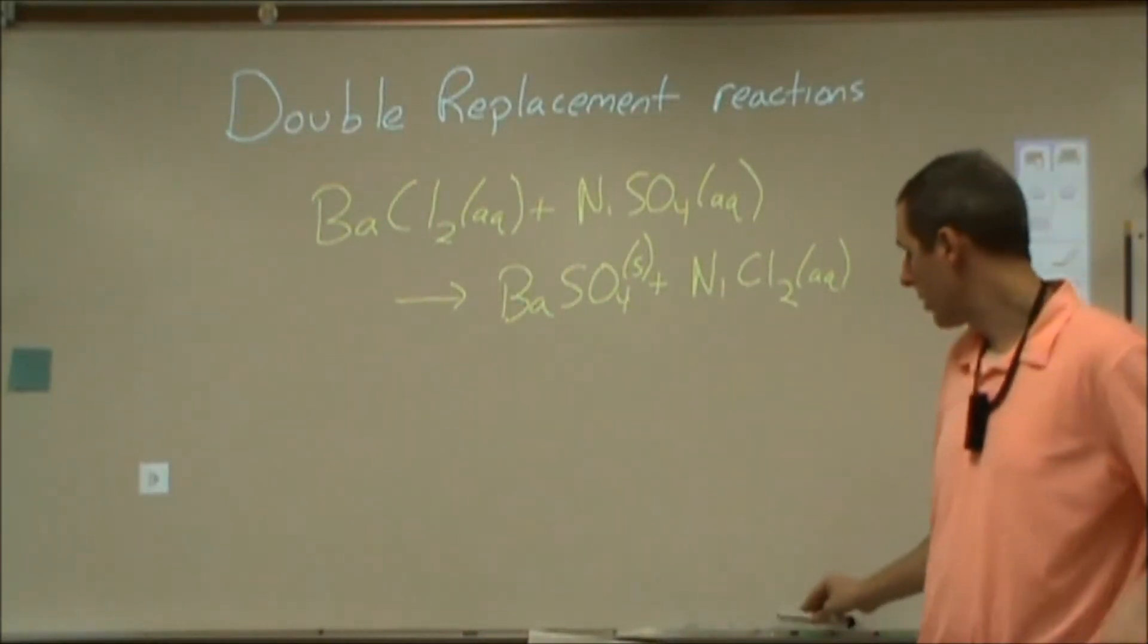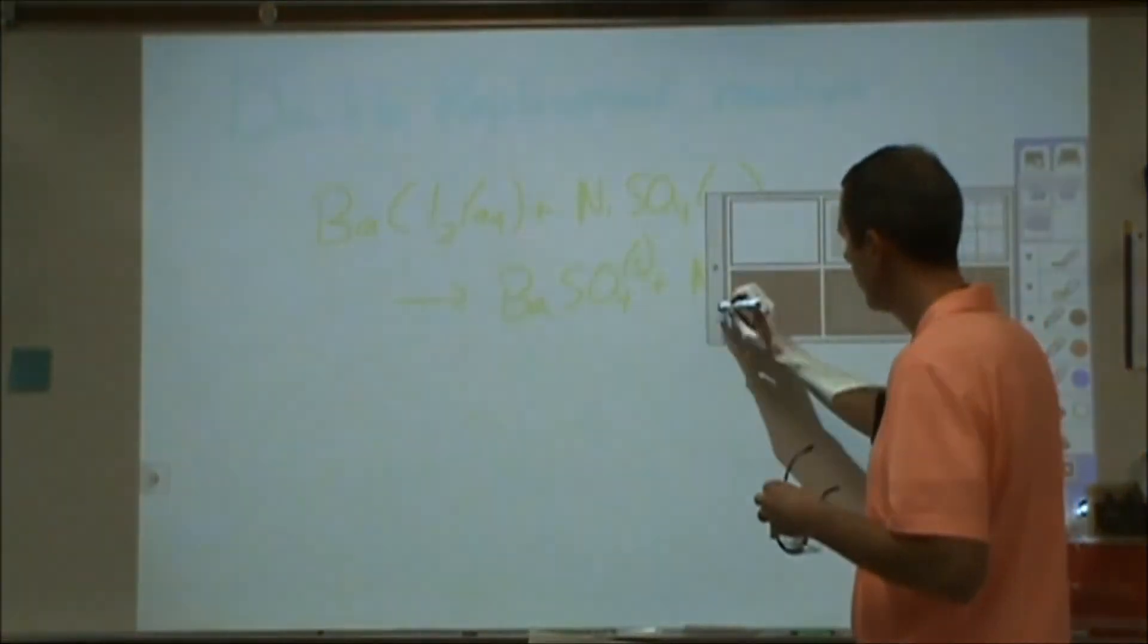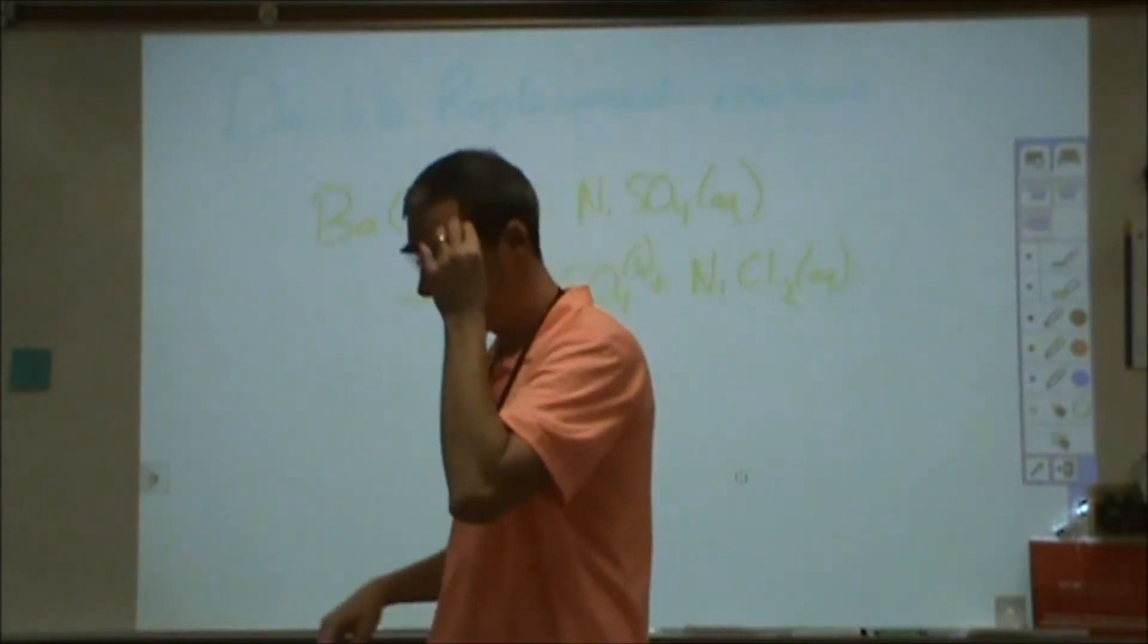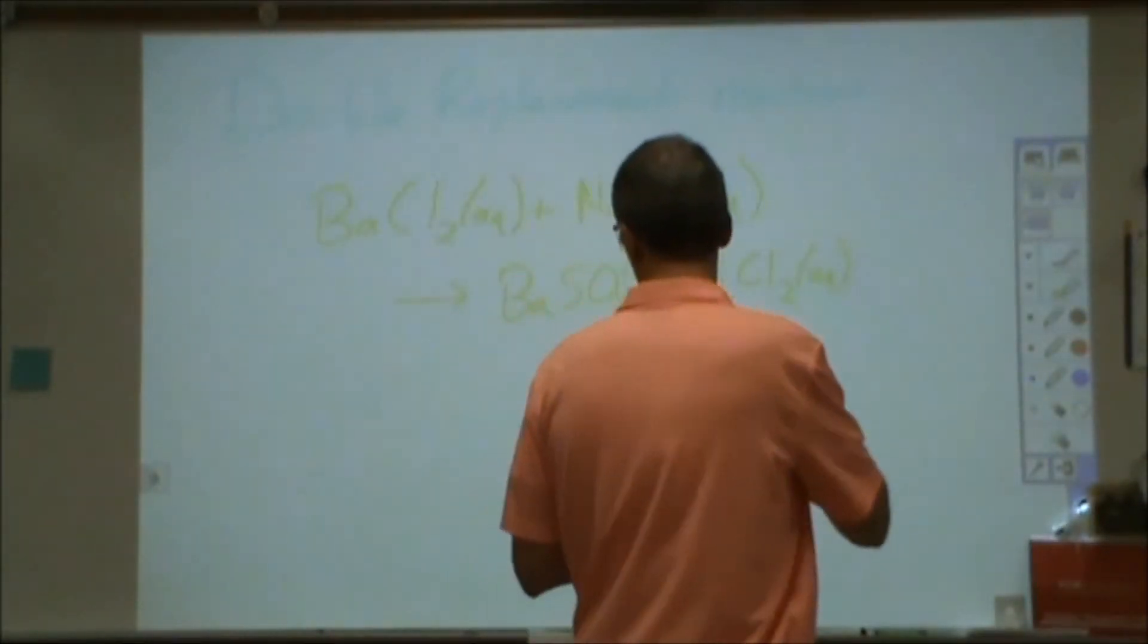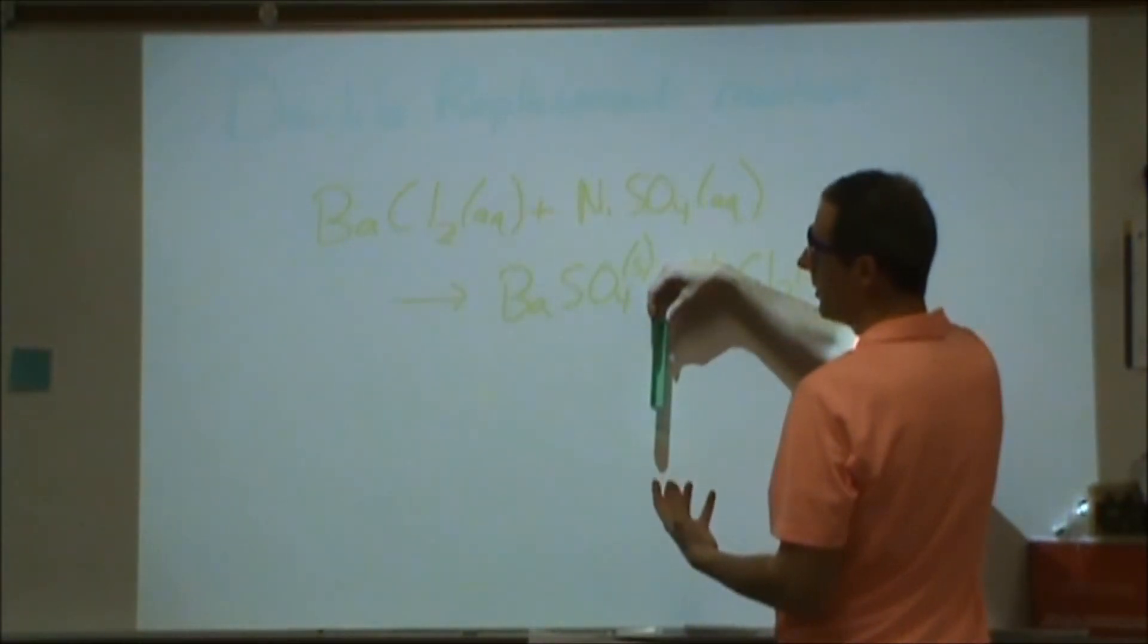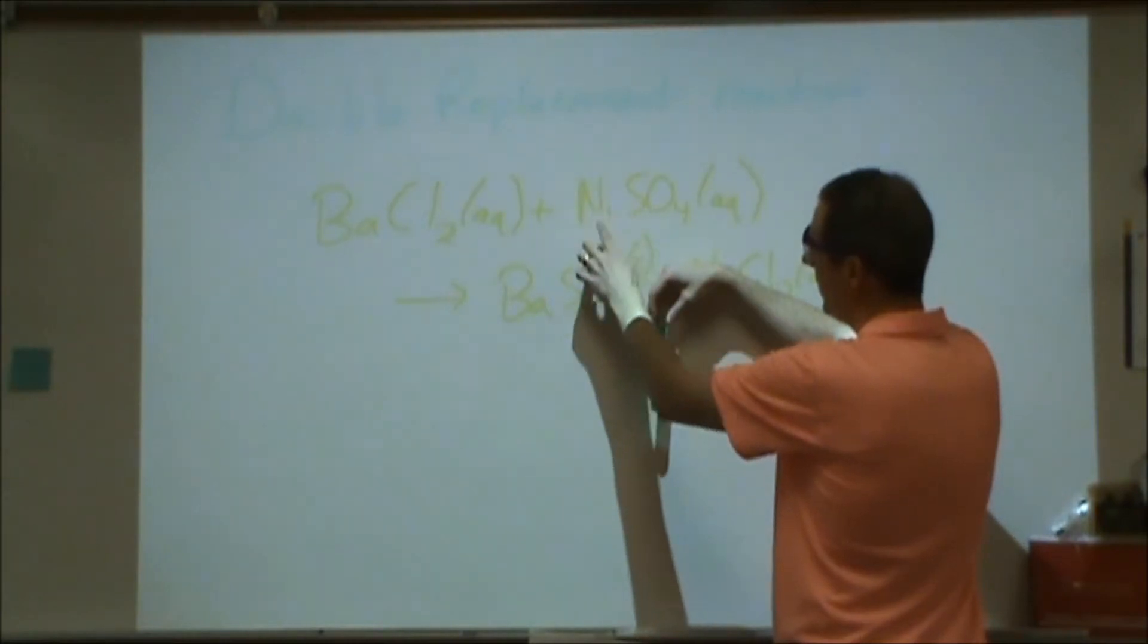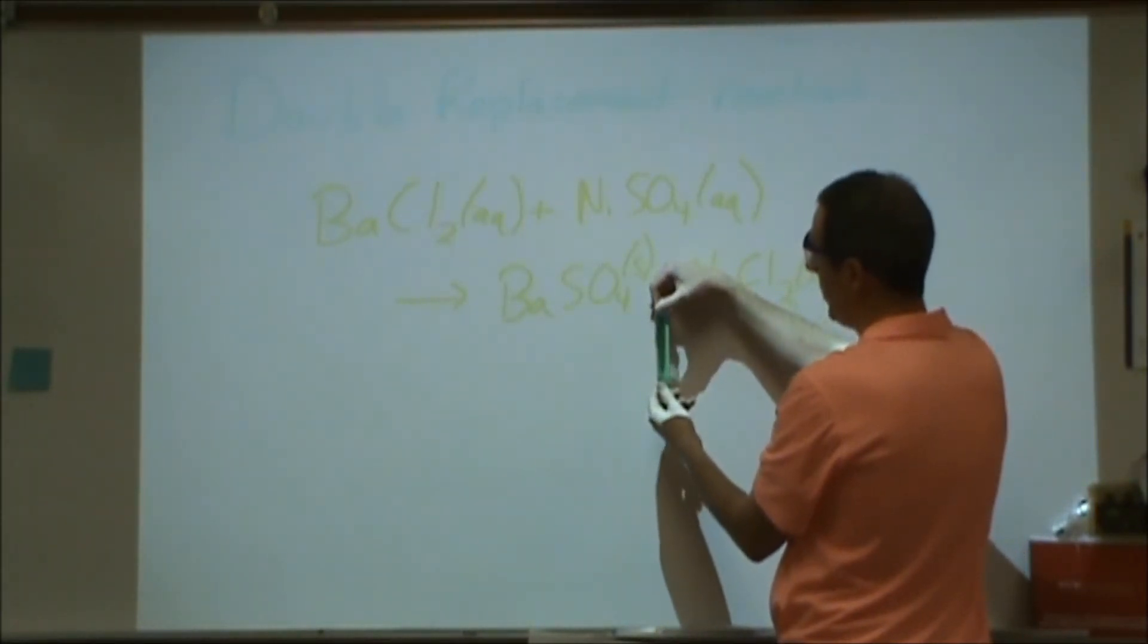So I actually ran this reaction earlier. Let me switch colors here for a second so you can see this. So the barium chloride is a colorless and clear salt solution. Nickel sulfate, the nickel is a green color solution that's clear. And you can see that green color still here.